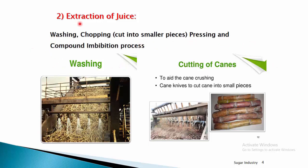For extraction of juice, once the sugar cane is received at the industry, all the cane is first washed with water jets using conveyors and rolling rollers. Then it undergoes chopping — the sugar cane of 8 to 10 feet is cut into small pieces. This chopping process uses cane knives to cut the cane into small pieces for pressing.